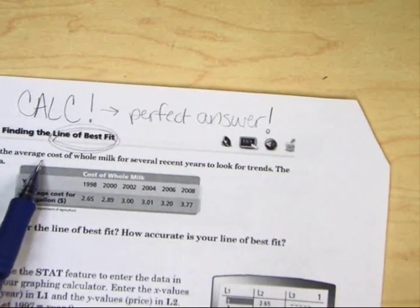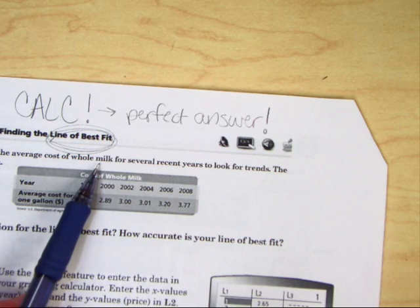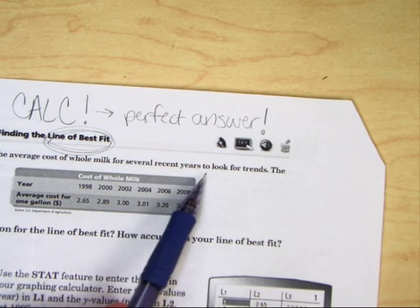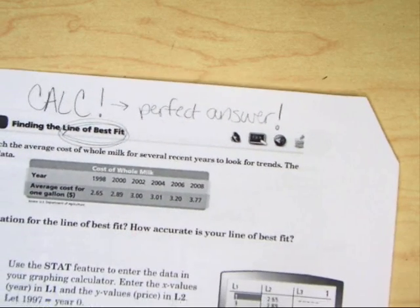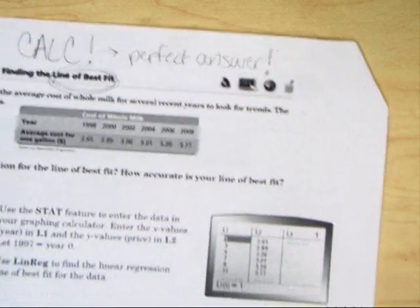Food. You researched the average cost of whole milk for several recent years to look for trends. Maybe it's going to go up, maybe it's going to go down. I guarantee you it will go up. The table shows you the data.